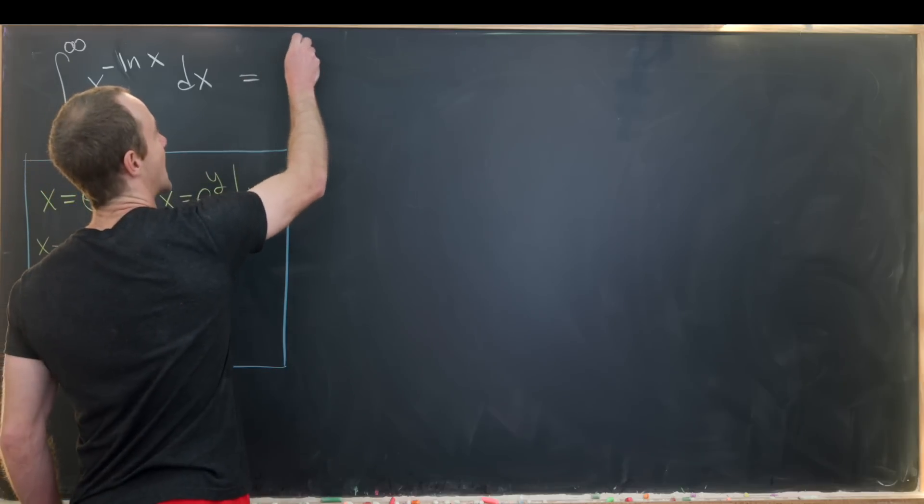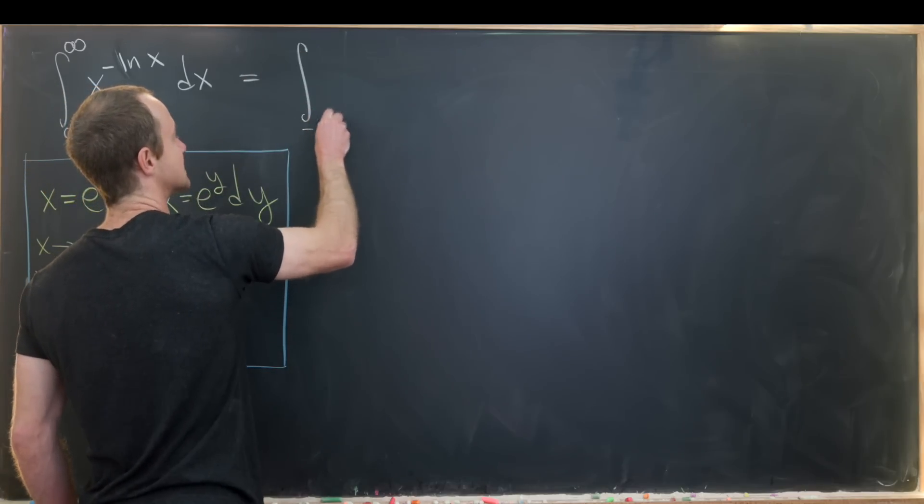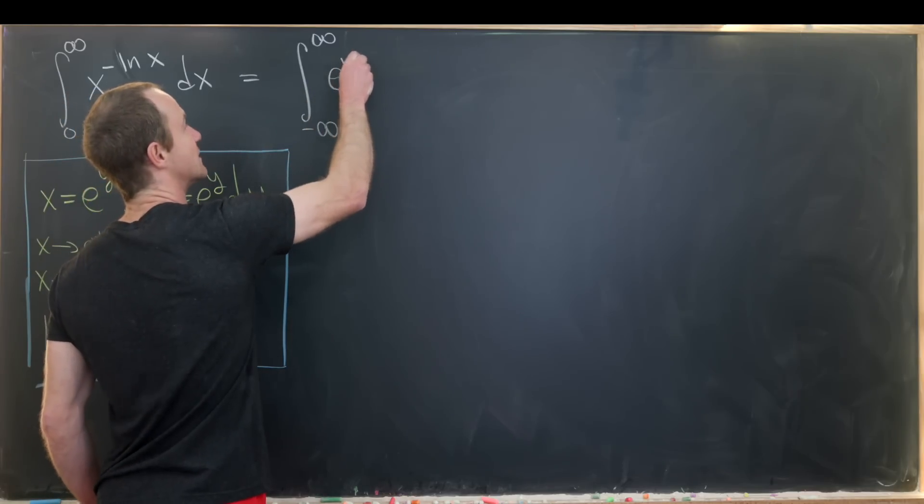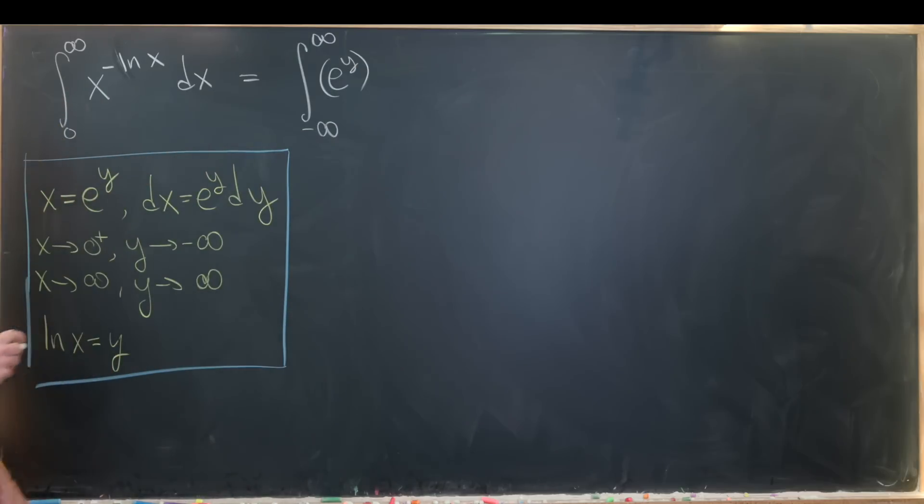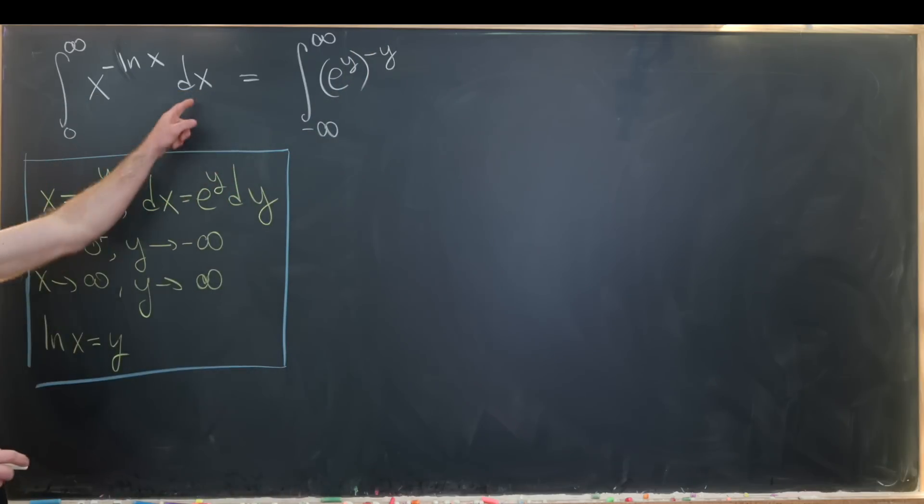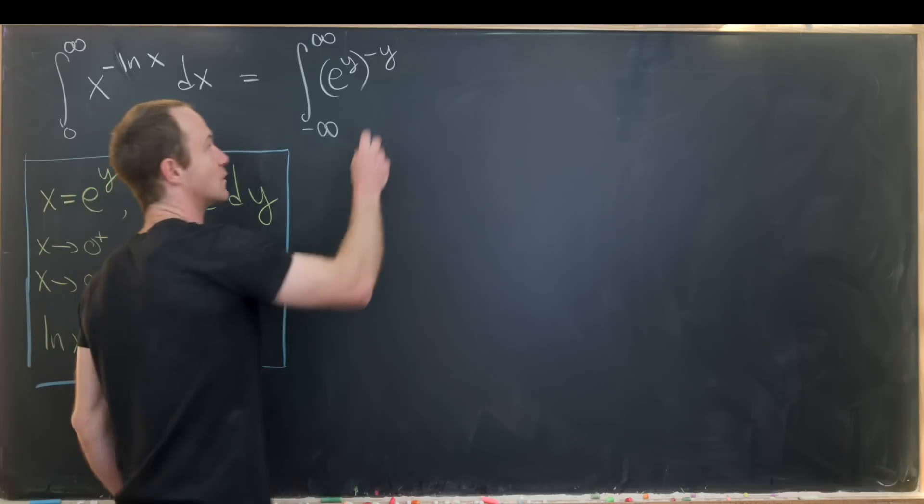So here we're going to have now the integral from minus infinity up to infinity because of the bounds of integration changing as we discussed. And then we'll have x. Well, let's recall that x became e to the y. So we have e to the y. And then that is going to be raised to the minus natural log of x or minus y power. And then dx, like we said, was e to the y dy.